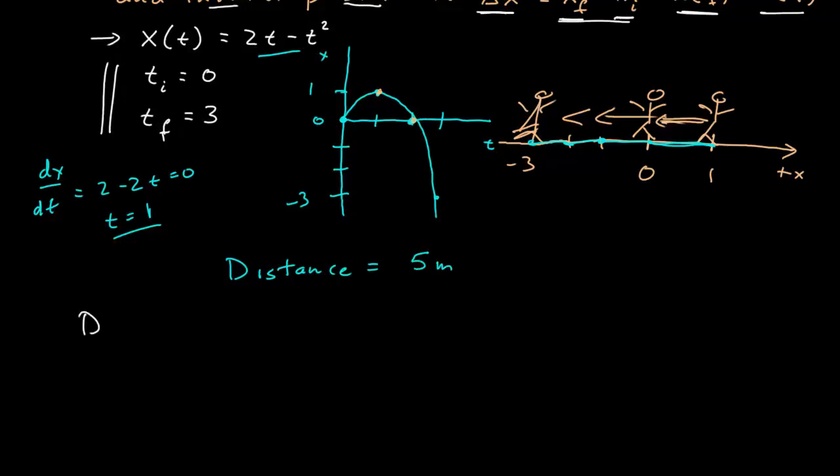How would we calculate the displacement? This is what I call delta x or x final minus x initial. This is the position evaluated at the final time, which is three seconds, minus the position evaluated at the initial time, which is zero. At the final time, that's minus three meters minus the position at t equals zero, which is zero. So the displacement is negative three meters.